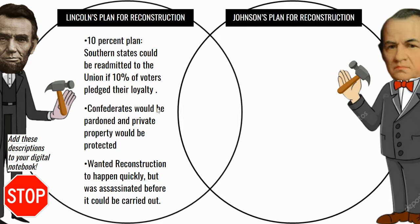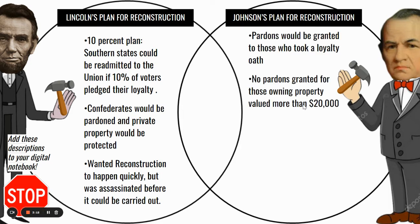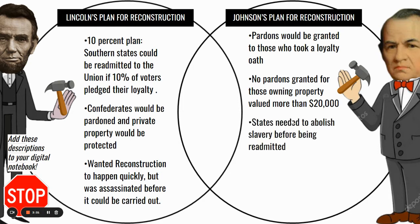When Lincoln was assassinated, his vice president Andrew Johnson took the presidency, becoming the 17th president. His plan for Reconstruction was a little more intense than Lincoln's. Pardons would be granted only to those that took a loyalty oath — you would only be forgiven if you pledged your loyalty. No forgiveness would be given to those that owned property valued at more than $20,000, which kept the wealthy from easily buying their forgiveness.